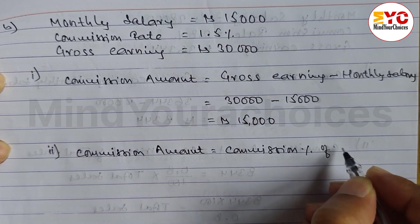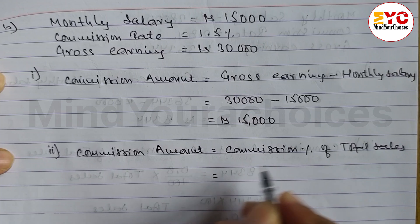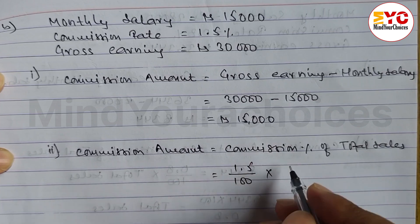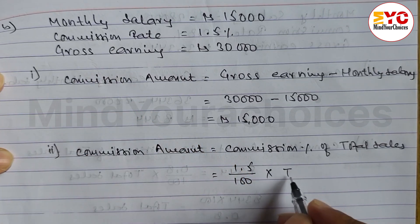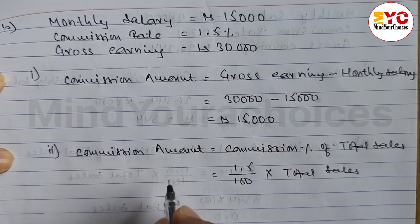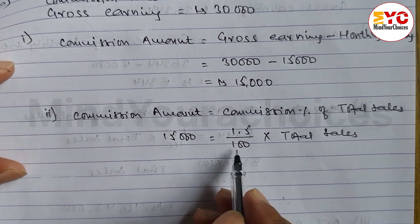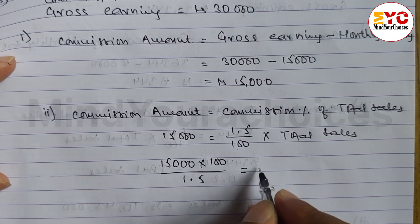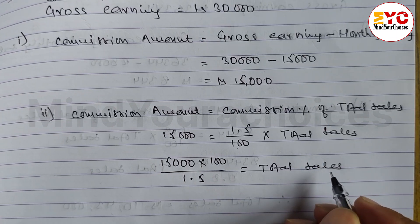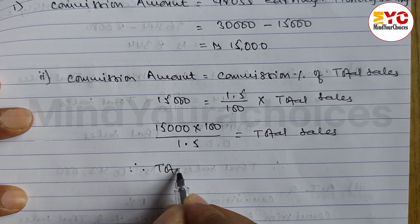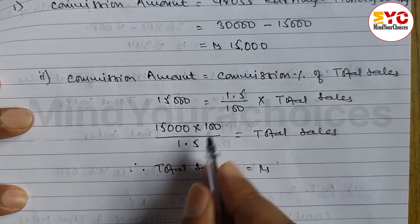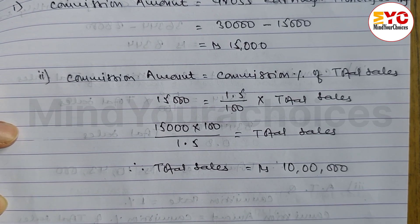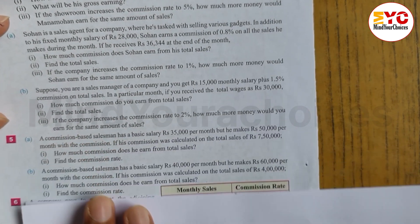Question 2: Find the total sales. Commission amount equals commission percent of total sales. So 15,000 equals 1.5 divided by 100 into total sales. Cross multiplying: 15,000 into 100 divided by 1.5 equals total sales. Therefore, total sales equals Rs. 10,00,000.